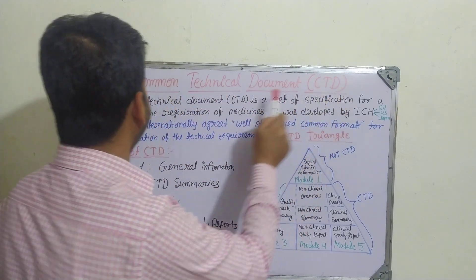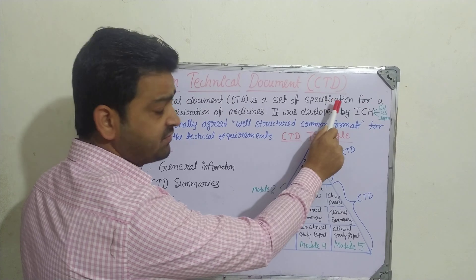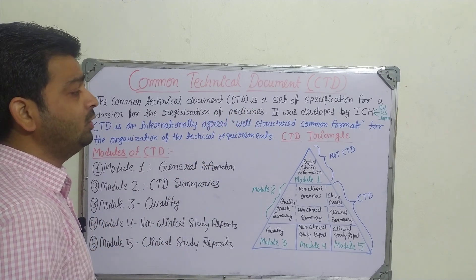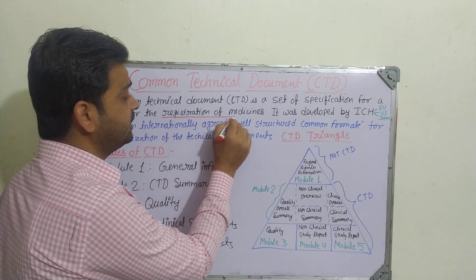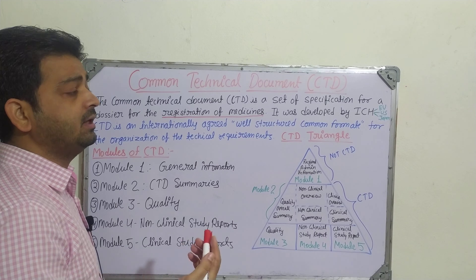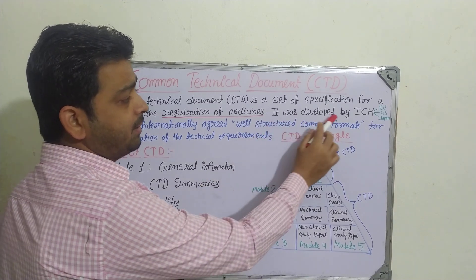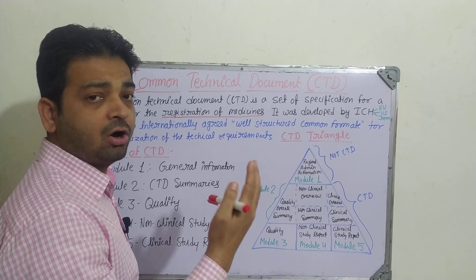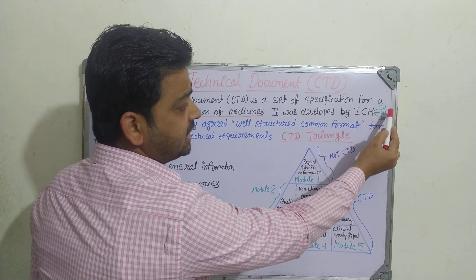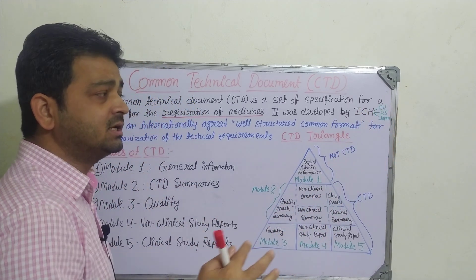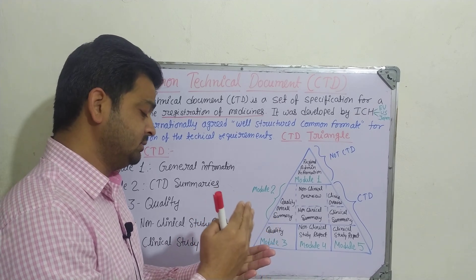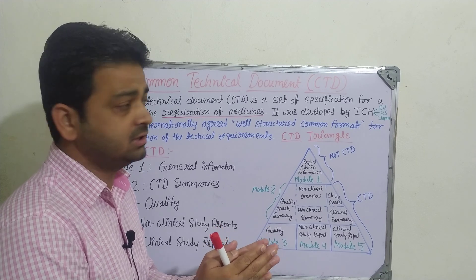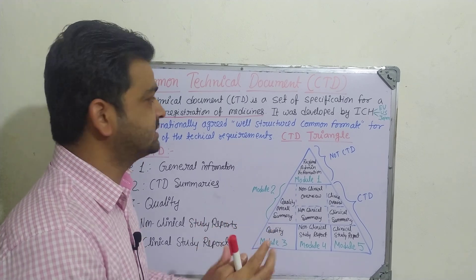The Common Technical Document, CTD, is a set of specifications for the registration of medicine. The goal is the registration of a particular medicine by the FDA or by the Ministry of Family, Labor and Welfare, depending on the country. It was developed by the ICH — the International Council for Harmonization, formerly the International Conference on Harmonization. The European Union, United States, and Japan collected common points through ICH, making it applicable to all countries worldwide.